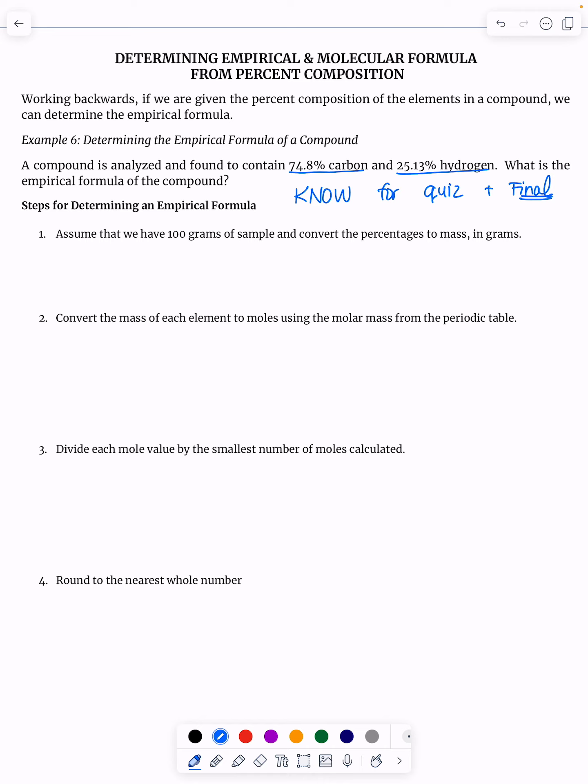Step one is assume that this percentage is 100 grams out of 100 grams. So those percentages automatically become grams. So take the percentage and just say, I have grams of it. Then with these grams, my second step here is convert the mass to moles using the molar mass. Grams divided by molar mass is moles. We learned that in our last lecture.